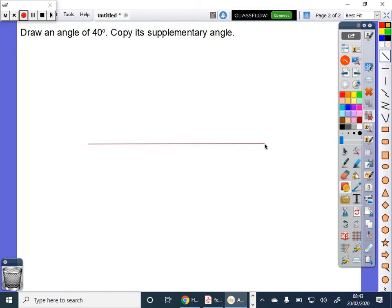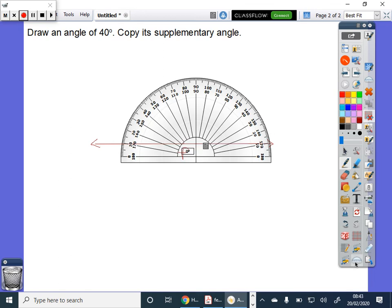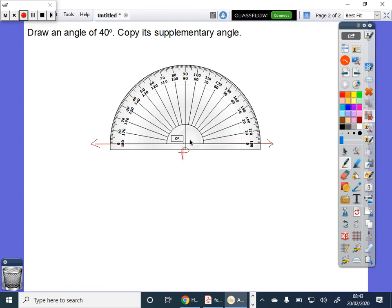Now first, draw a line. Take a point P on it. Now draw a 40-degree angle with P as vertex.